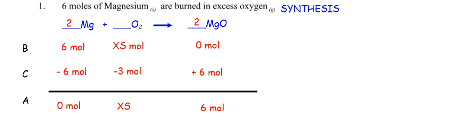I just asked you to complete the BCA table. But I could ask you: how many moles of oxygen were used? Three moles. How many moles of magnesium oxide did you create? Six moles. How much magnesium is left? Zero moles. There are different questions you can be asked, but if you can set up that BCA table, you can answer any question.